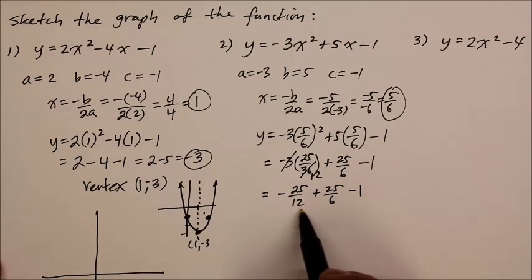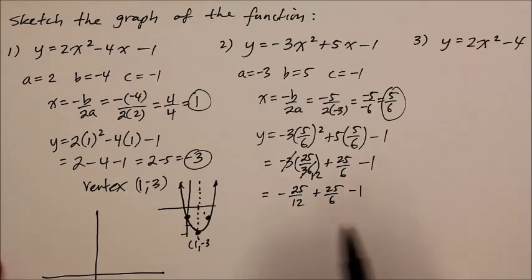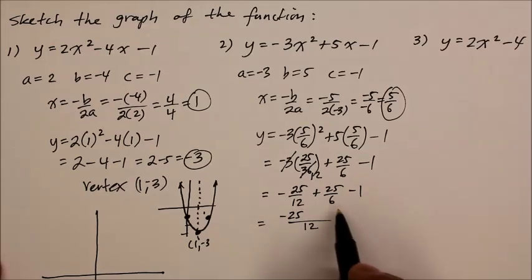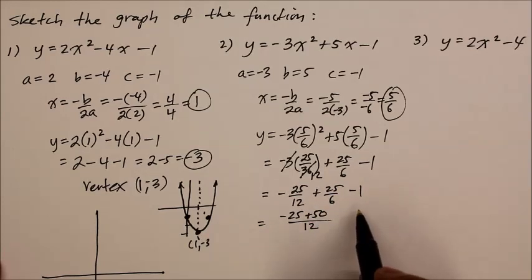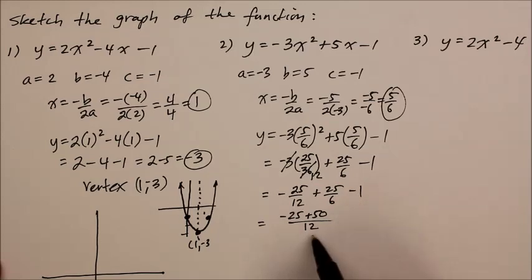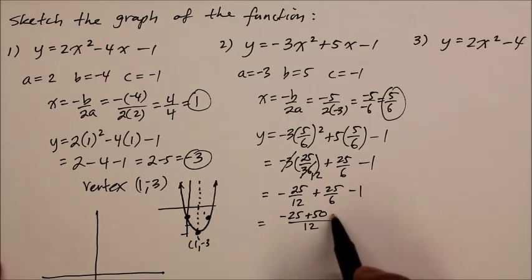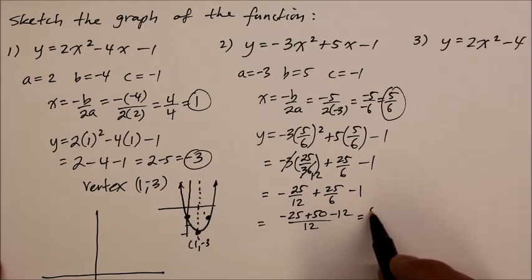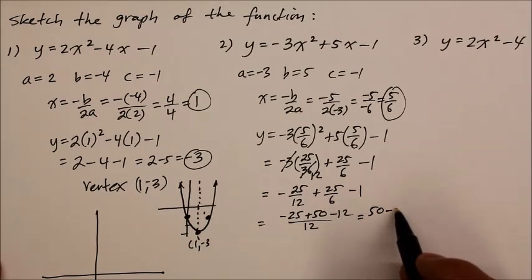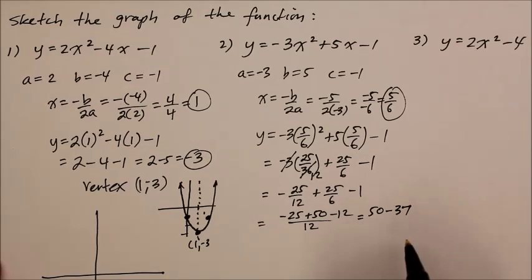The negative 3 coefficient reduces the denominator 36 by 12, so we end up with negative 25 over 12 plus 25 over 6 minus 1. Common denominator between the three terms is 12. Now that's already negative 25 with the 12. How does 6 become a 12 denominator? Times 2. So 2 times 25 is 50. How does negative 1 over 1 become 12? Multiply by 12, so it becomes negative 12.